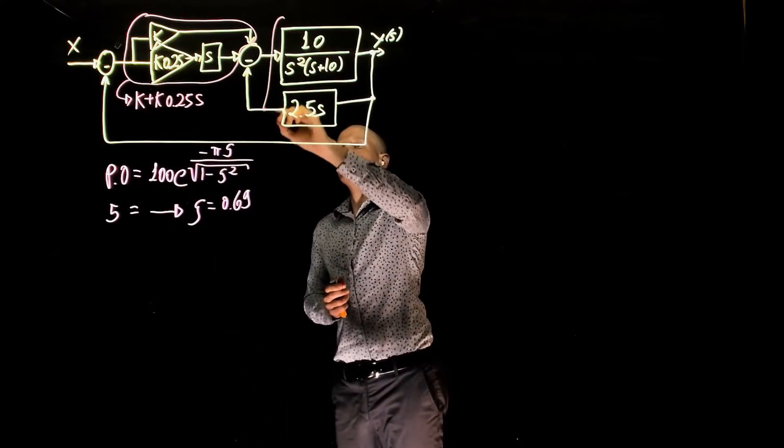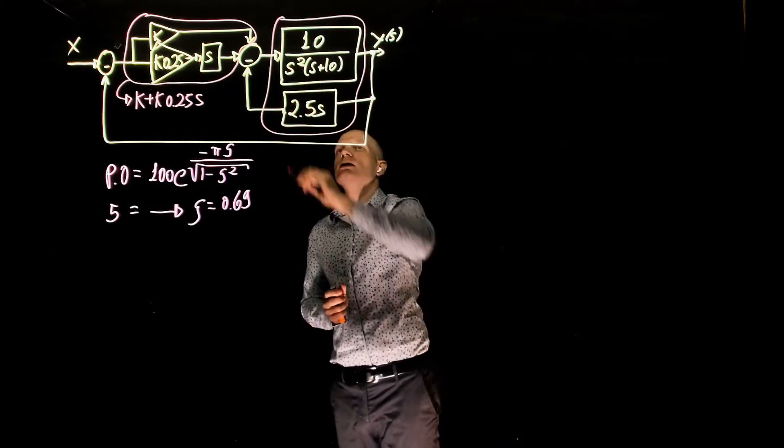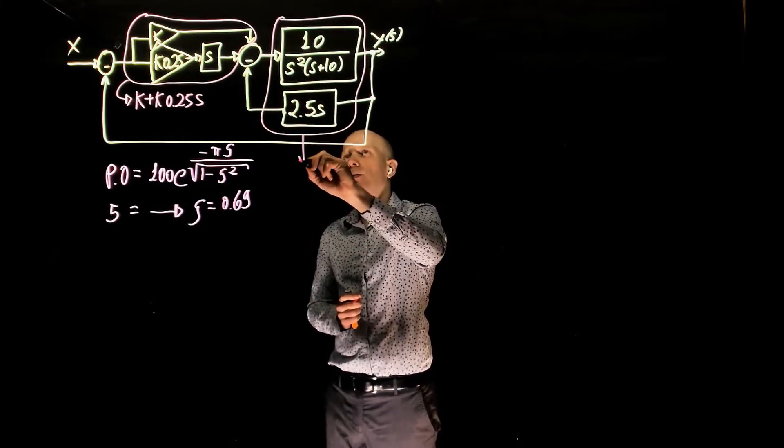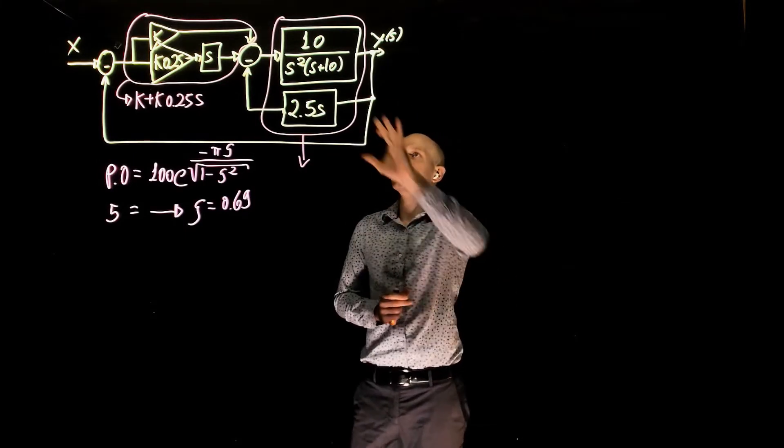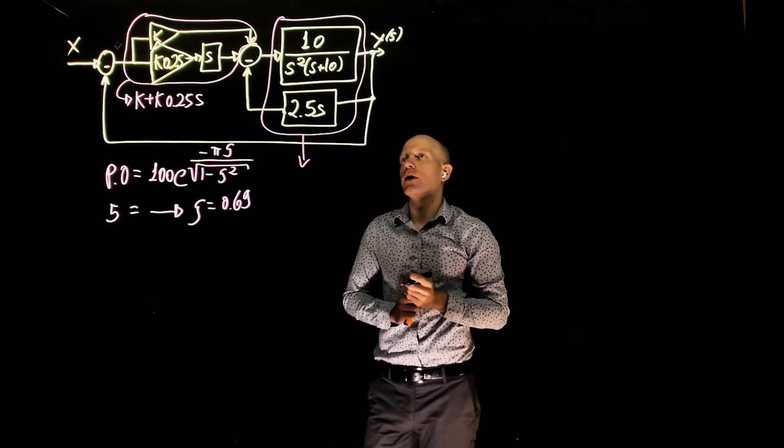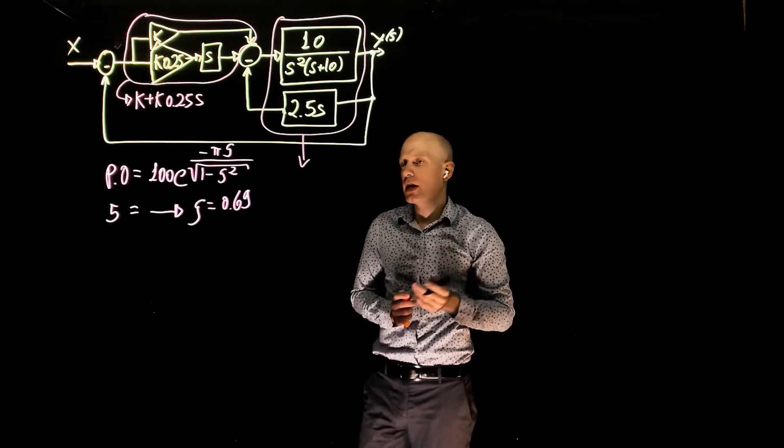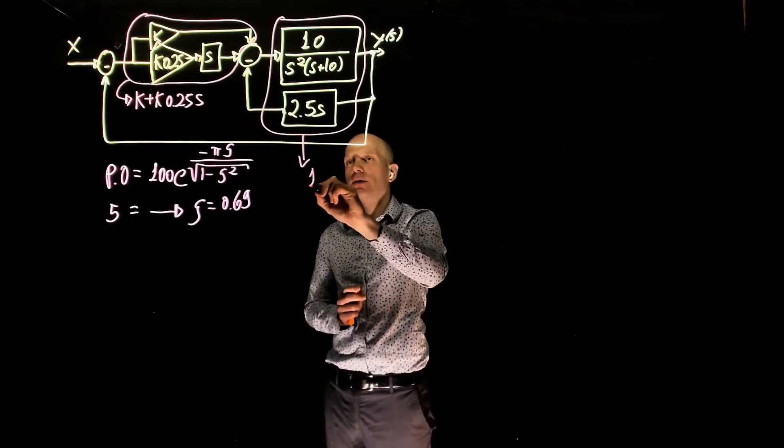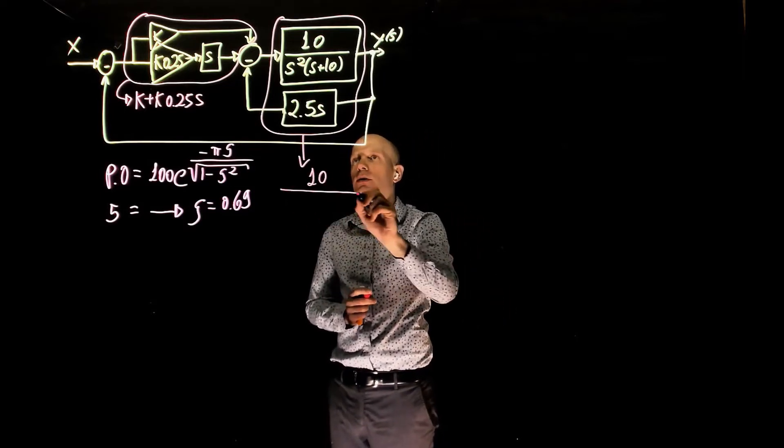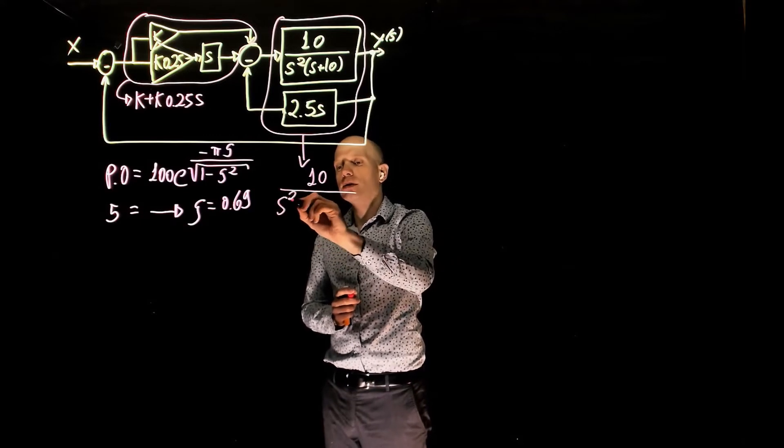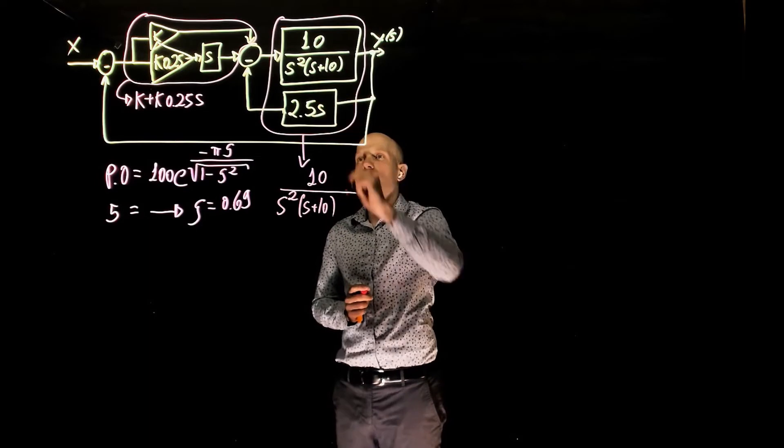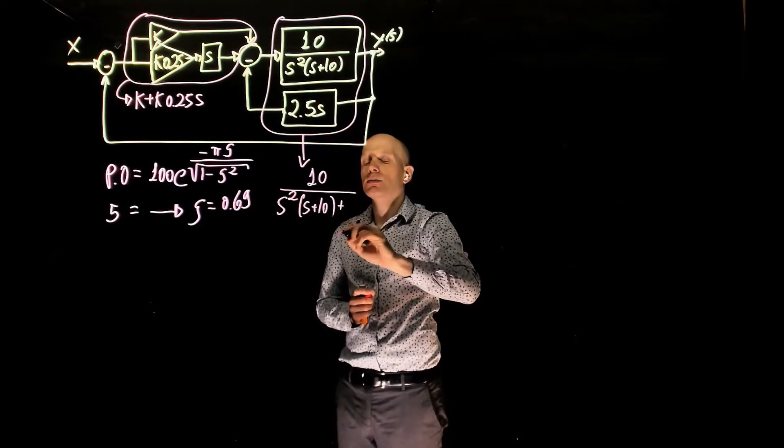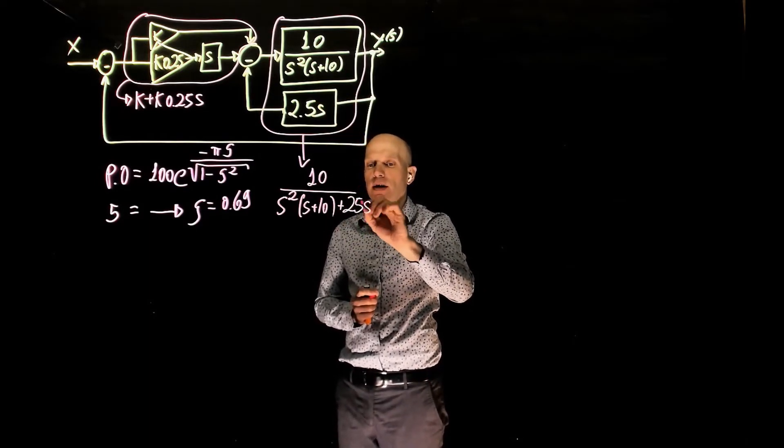And this part of the diagram now can also be simplified, this is now a feedback loop. So we have the line function divided by 1 plus the line function times the feedback function. This is again very simple calculation, I will just give the result here, 10 over s squared times s plus 10 plus 10 times 2.5s, so plus 25s.